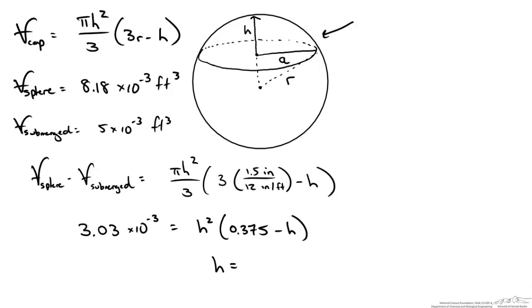Which I get as 0.106 feet, which is approximately 1.27 inches. So that is the height of the baseball above the surface of the water.